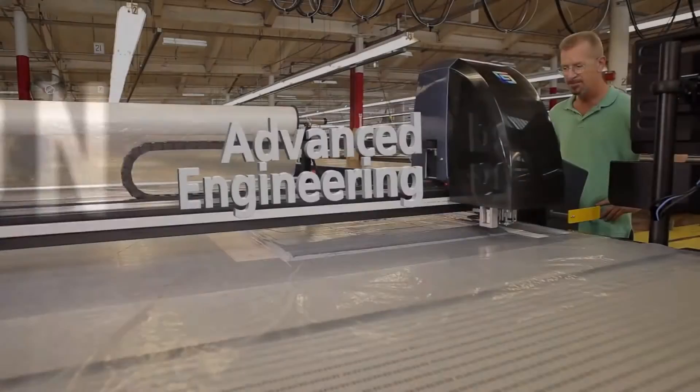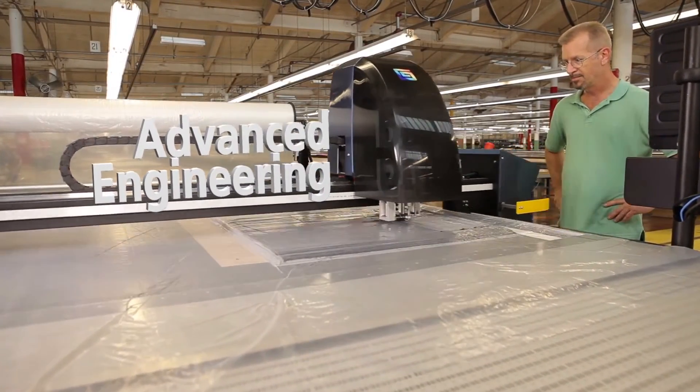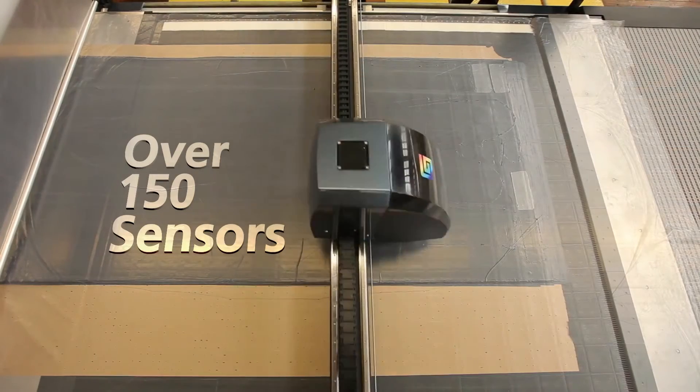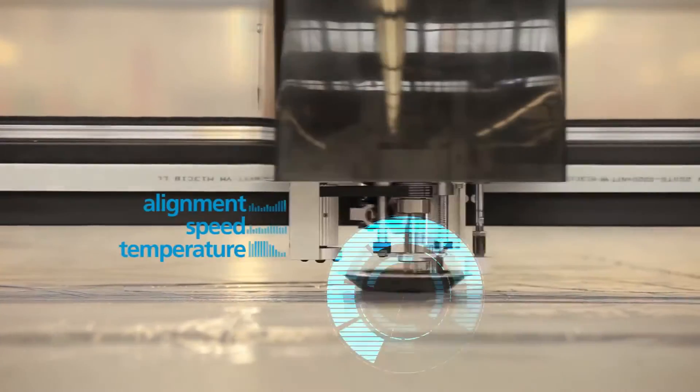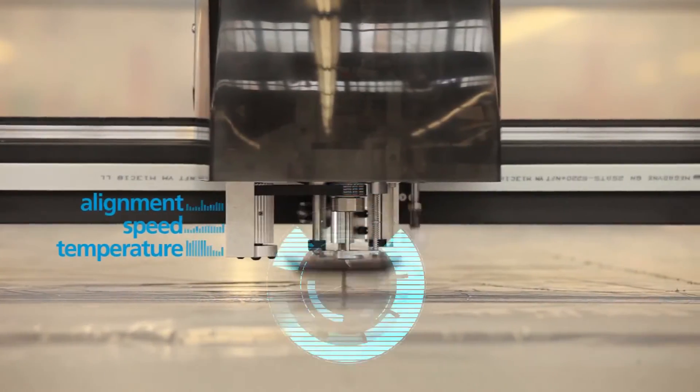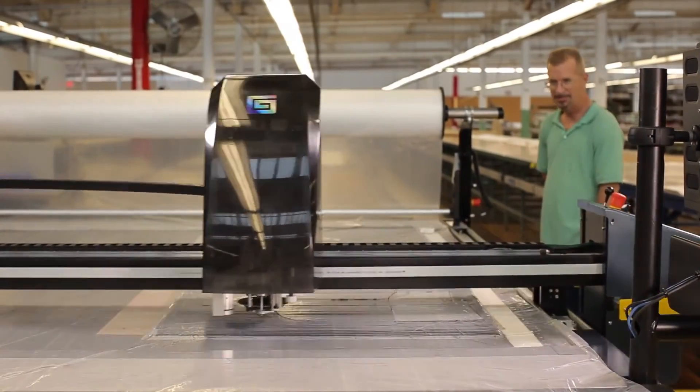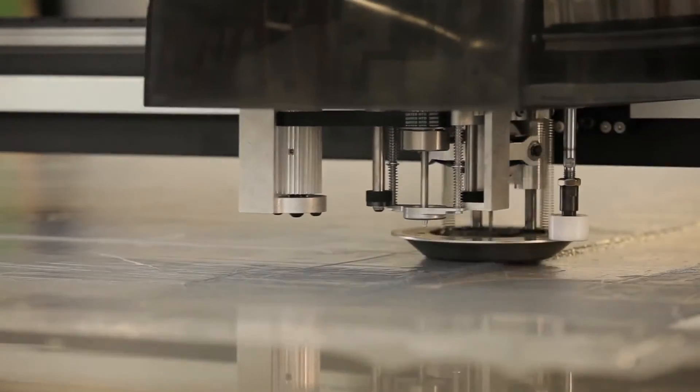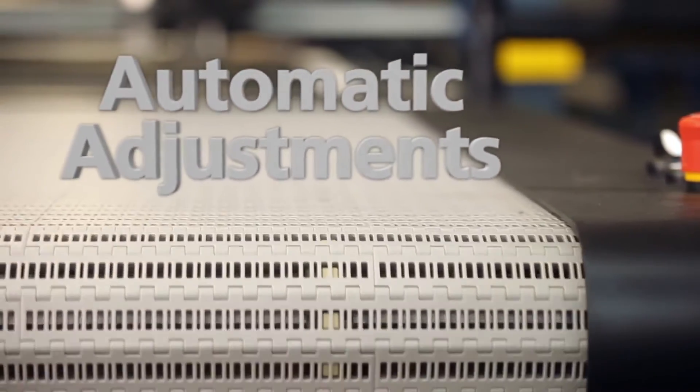Paragon's advanced engineering takes the variability out of cutting. Paragon has over 150 sensors monitoring everything from knife alignment to motor speeds to knife temperature to motor currents. What this allows us to do is make decisions in real time, adjusting parameters in the background so we're making corrective action before an issue becomes a problem.